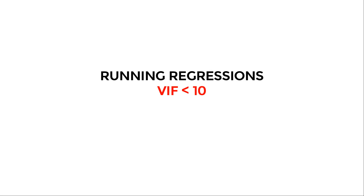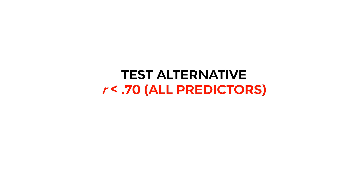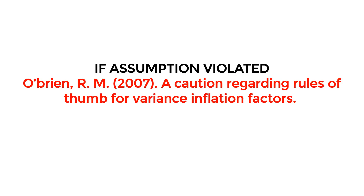The next assumption is no strong multicollinearity. Normally you check this by looking at variance inflation factors (VIF) to see whether they are all below 10. For that, you would run the two regressions outside of Process. If you don't want to rebuild your regression models, a second option is to look at correlations between all your predictor variables — if those correlations are all below 0.70, in general you won't have problematic multicollinearity. What to do if a VIF exceeds 10? There isn't much you can do, but I would recommend reading the article by O'Brien, 'A Caution Regarding Rules of Thumb for Variance Inflation Factors,' where he claims that in many cases this violation isn't that problematic.